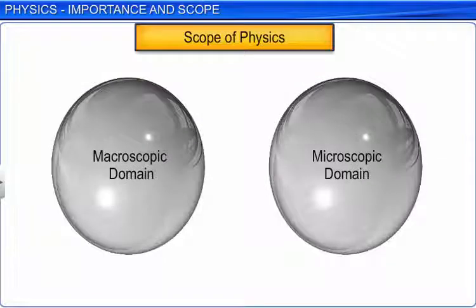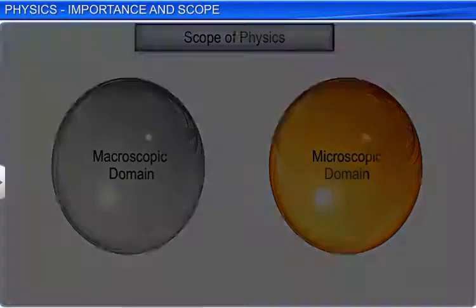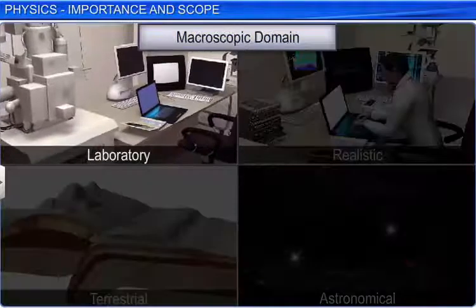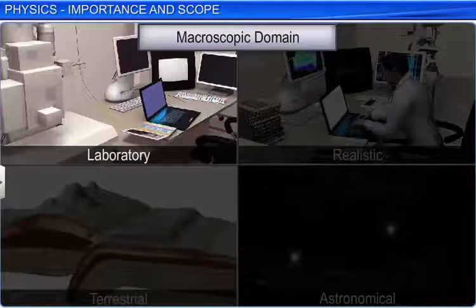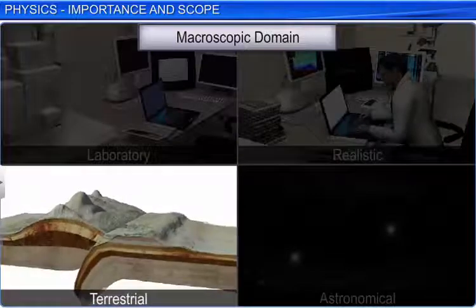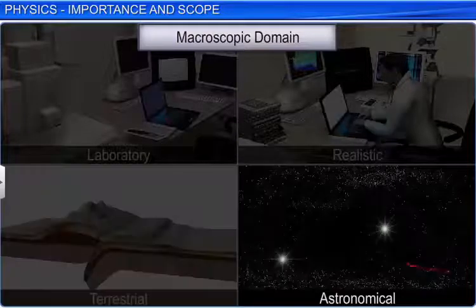The scope of physics can be divided into two major domains: macroscopic and microscopic. The macroscopic domain deals with phenomena at laboratory, terrestrial, and astronomical scale.